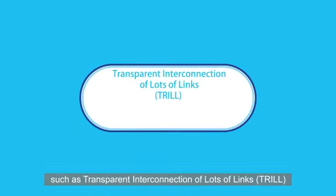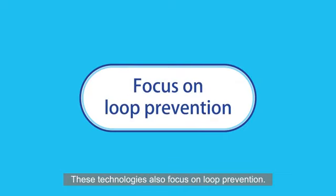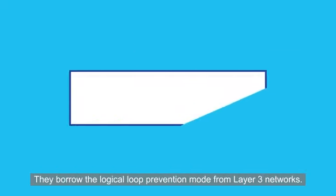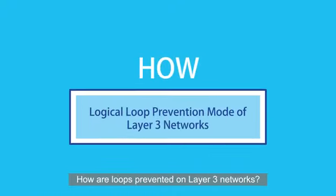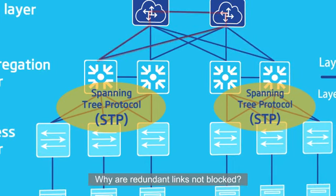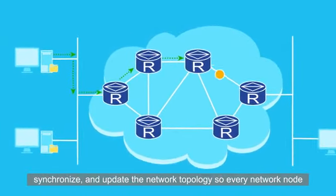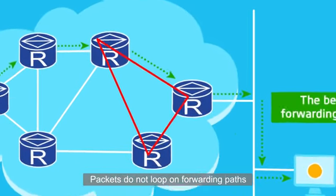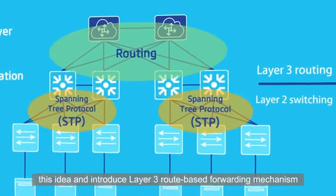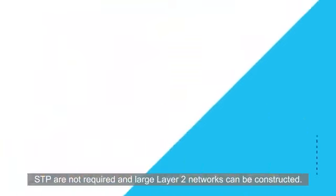Routing layer 2 forwarding technologies such as transparent interconnection of lots of links (TRILL) and shortest path bridging (SPB) are the second type. These technologies also focus on loop prevention, but do not block redundant links like STP or prevent loops like network device virtualisation. Instead, they borrow the logical loop prevention mode from layer 3 networks. On layer 3 networks, routing protocols collect, synchronise and update the network topology so every node can identify the best forwarding path. Packets do not loop on forwarding paths even when physical loops exist, ensuring logical loop prevention. Routing layer 2 forwarding technologies introduce this layer 3 route-based forwarding mechanism to layer 2 networks, removing loops without requiring traditional STP, and enabling large layer 2 networks.